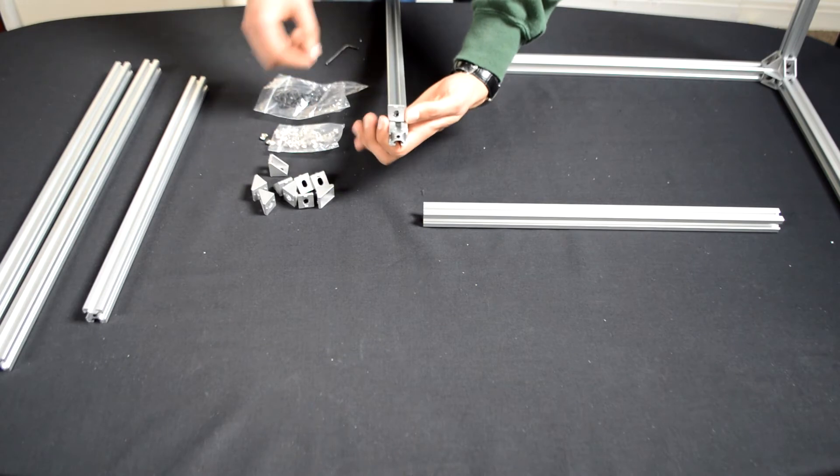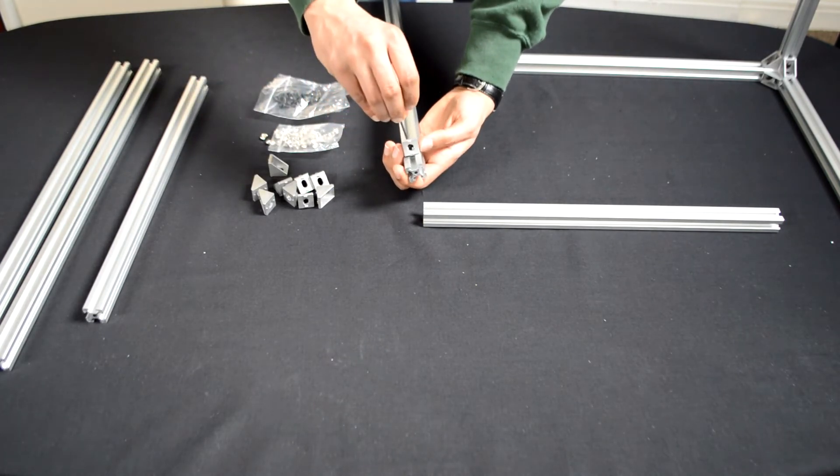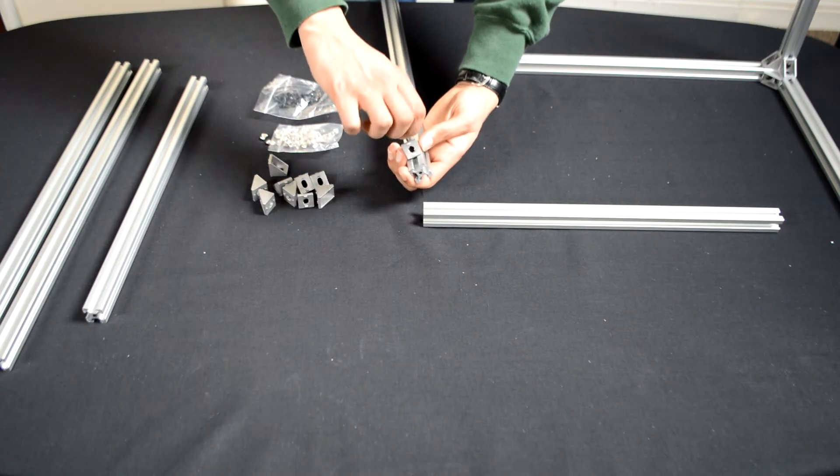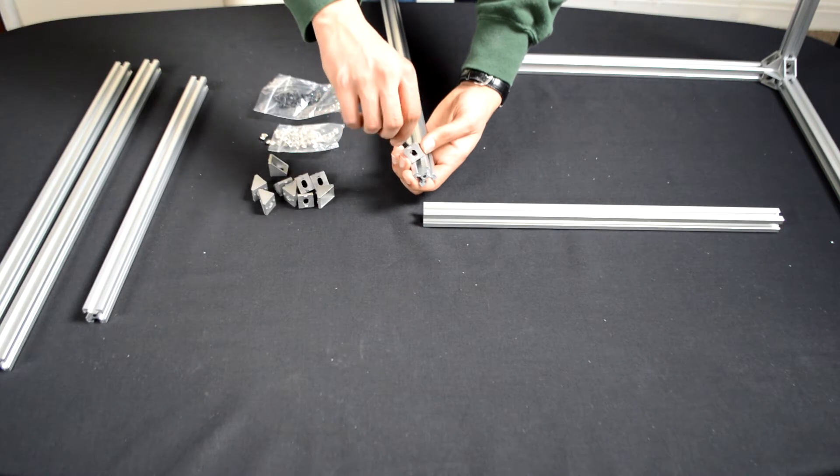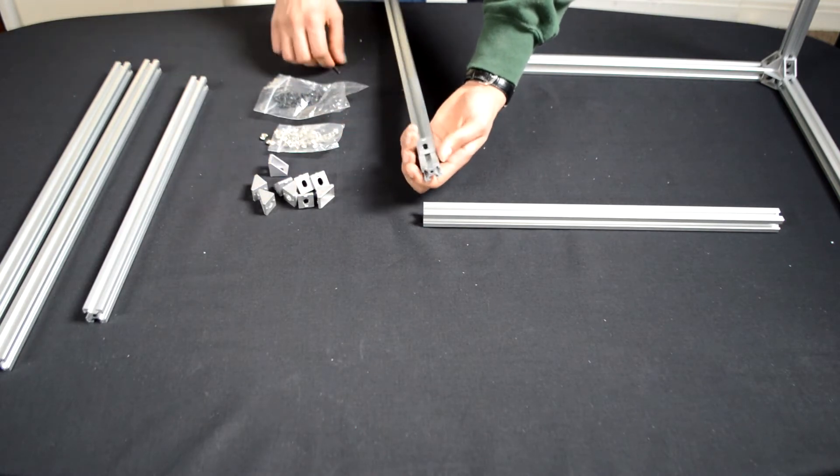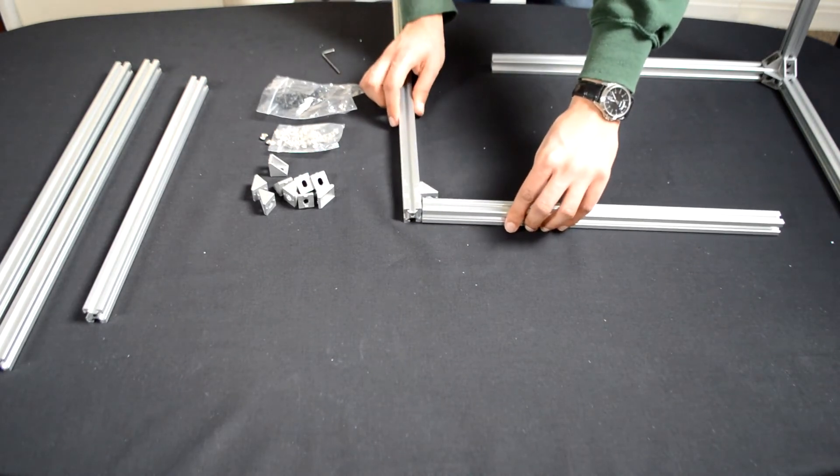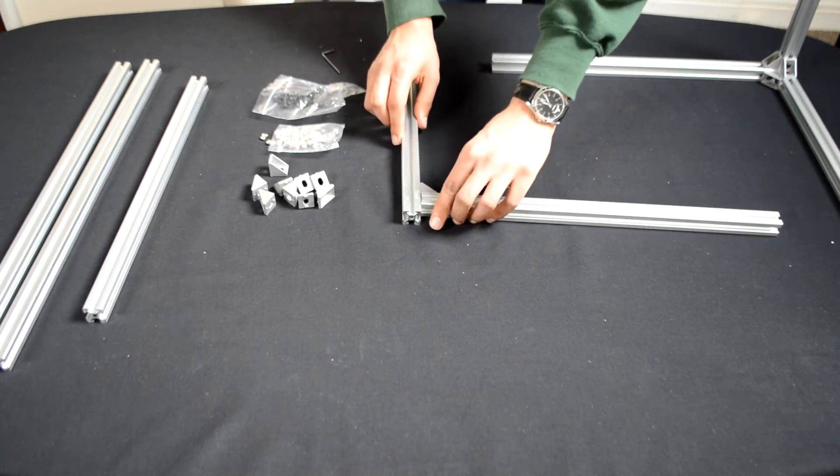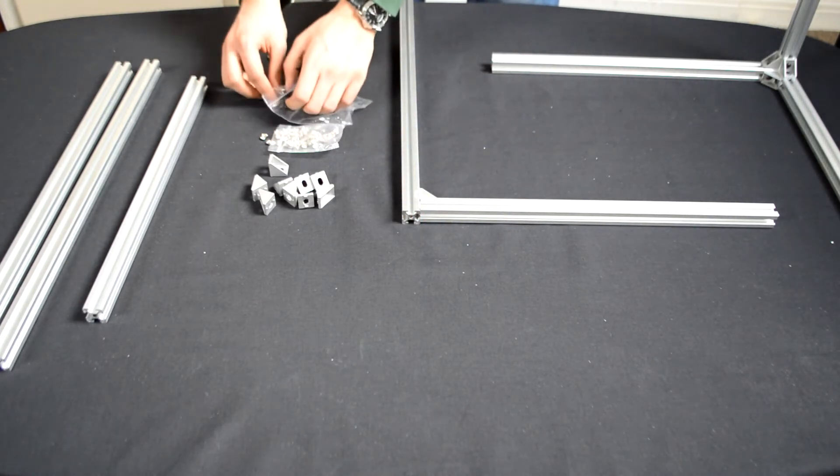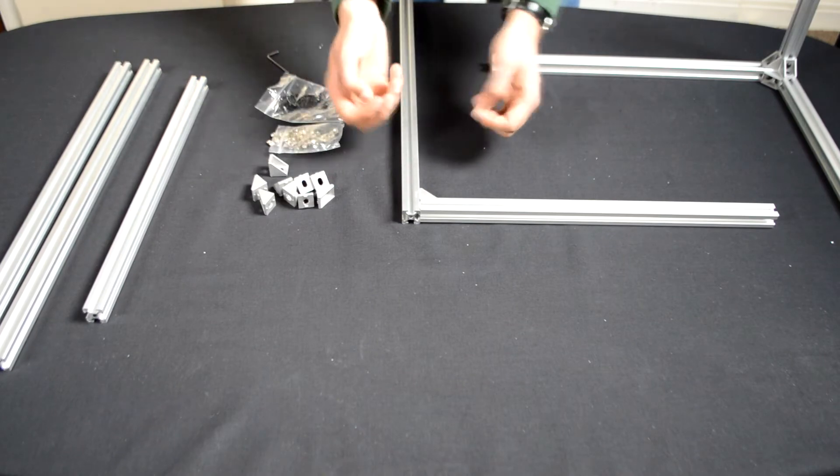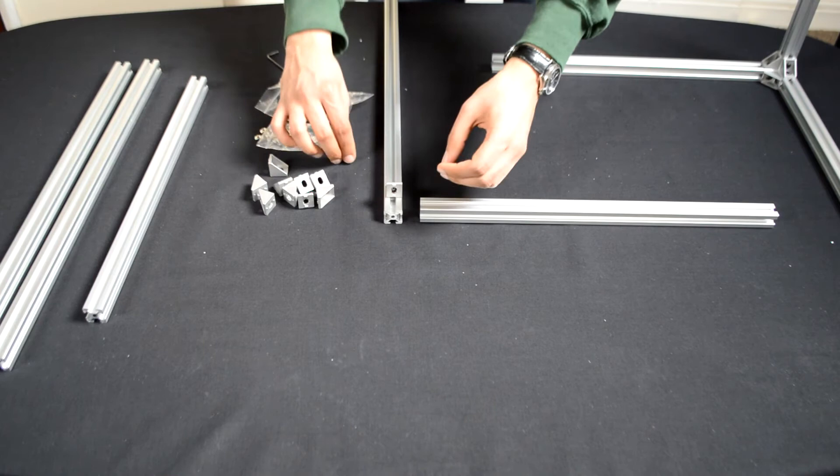And then take the Allen wrench and tighten it but just enough that you can still slide it up and down with a little bit of friction, and then line it up with the 400mm aluminum extrusion and do the same again.